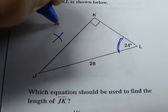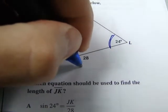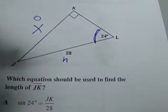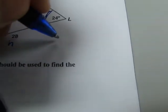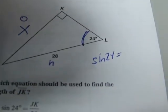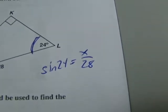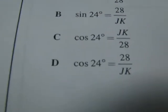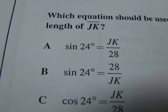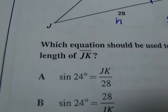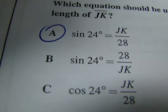Our x is our opposite and our 28 is our hypotenuse. So what we've got here is that opposite hypotenuse is sine. Sine of 24 equals x over 28. So let's see if there's anything that looks like that. Sine of 24 equals JK over 28. Well JK and x are the same thing so that is our answer. A.